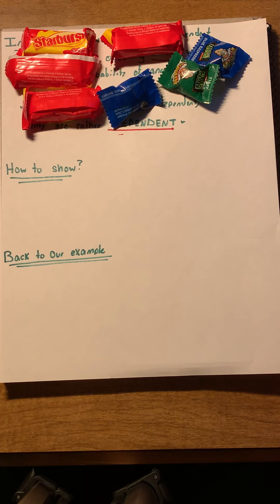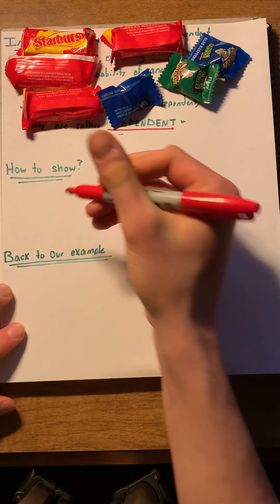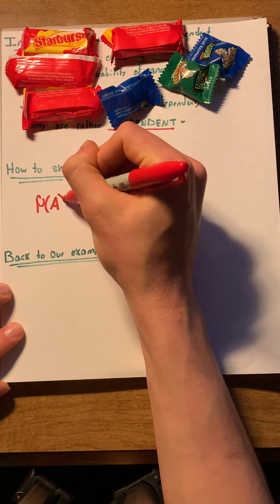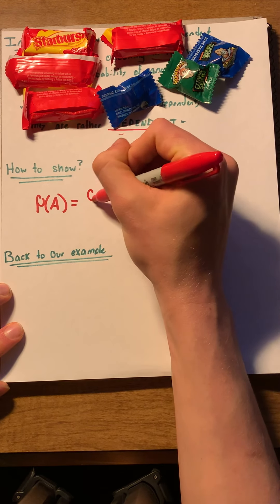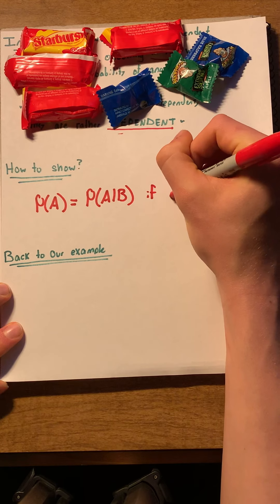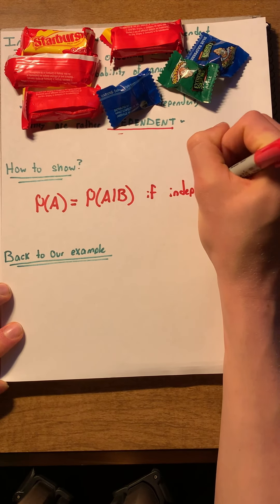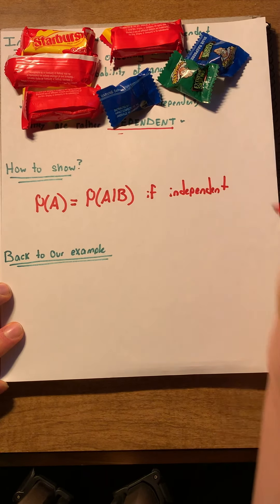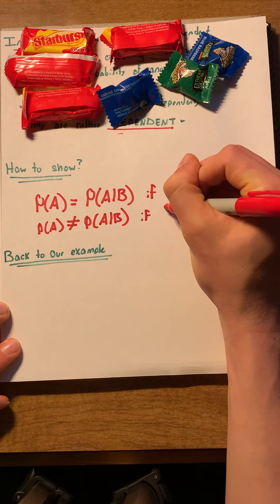We can actually show this using a formula. And that is, the probability of A equals the probability of A given B if two events are independent. And, similarly, the probability of A does not equal the probability of A given B if two events are dependent.